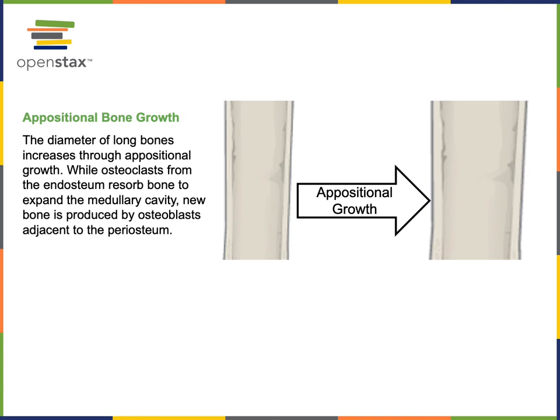In contrast to interstitial growth, appositional growth leads to an increased thickness or diameter of a long bone. The mechanism of appositional growth involves osteoclasts resorbing bone from the inner surface, while at the same time osteogenic cells in the periosteum generate osteoblasts that secrete osteoid, forming new osseous tissue adjacent to the periosteum surrounding the long bone.